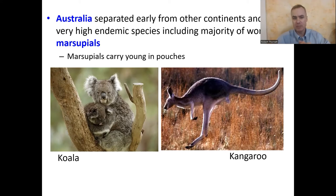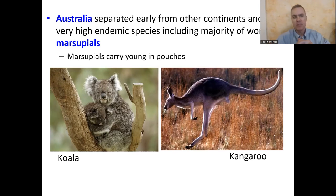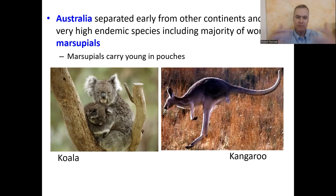Marsupials actually come from South America, believe it or not — going way back in geologic time. They crossed from South America across Antarctica when Antarctica was green, walked to Australia when it used to be attached to Antarctica, then evolved into the species we see today. There are still a few marsupials left in South America, but the majority are now in Australia.